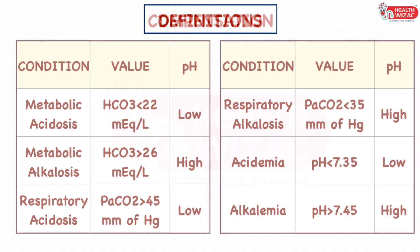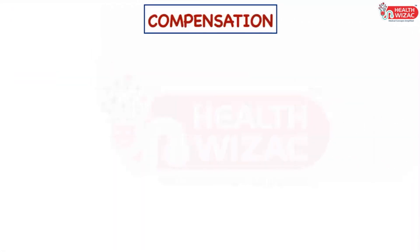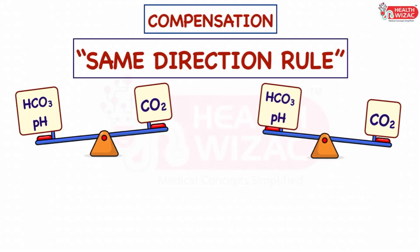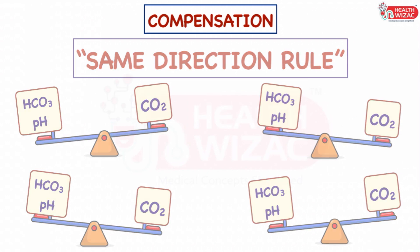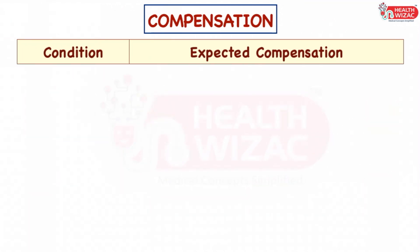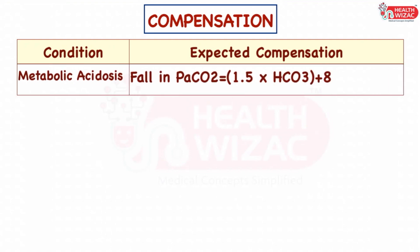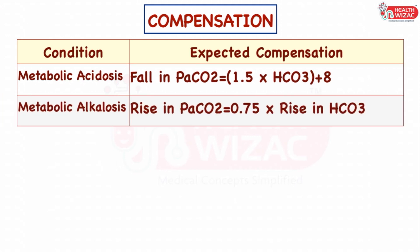The body tries to maintain normal pH by compensation, which always happens in the same direction: a fall in bicarbonate is compensated by a fall in PaCO2, and a rise in bicarbonate is compensated by a rise in PaCO2. In metabolic acidosis, bicarbonate falls, so the expected fall in PaCO2 is calculated by the formula: 1.5 × bicarbonate level + 8. In metabolic alkalosis, bicarbonate rises, so the expected rise in PaCO2 is calculated by: 0.75 × rise in bicarbonate level.